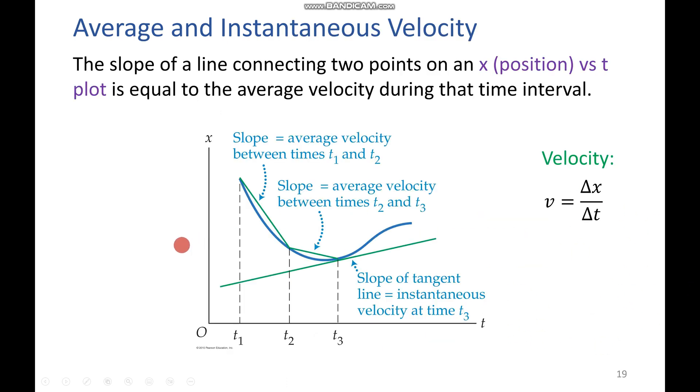Now let's discuss the difference between average and instantaneous velocity. We know that average velocity is displacement over time. Since displacement only cares about initial and final position, as we've talked about before, we can just draw a straight line between two points, and the slope of that line becomes our average velocity. See that here, from t1 to t2, and t2 to t3.